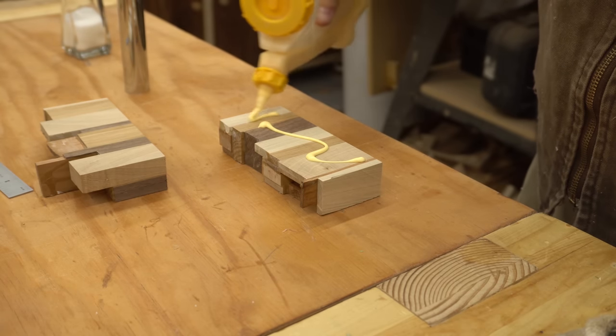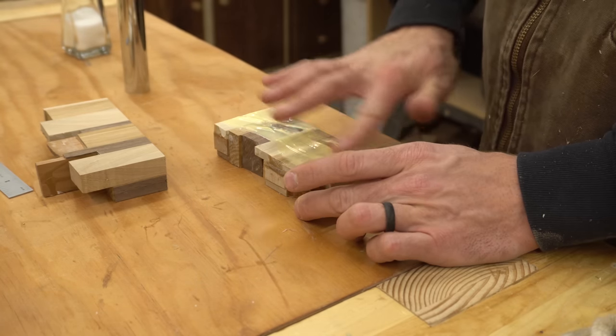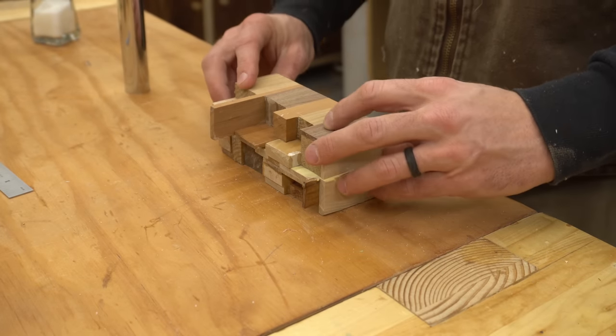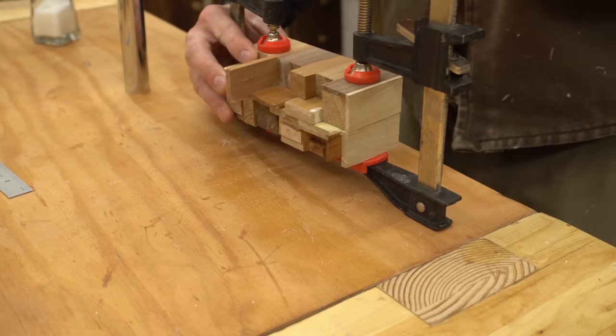This cigar holder goes together a lot like a giant pen would. There are two tubes that get glued inside a blank, so the first thing I have to do is figure out the general size I need and glue a blank together.